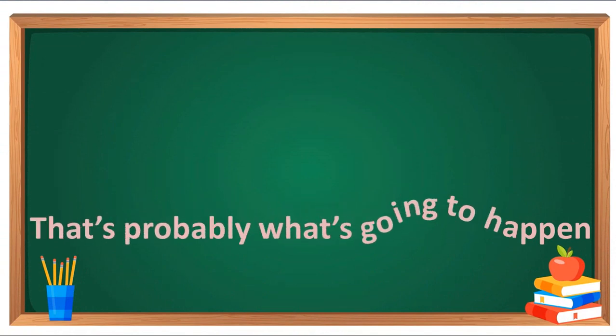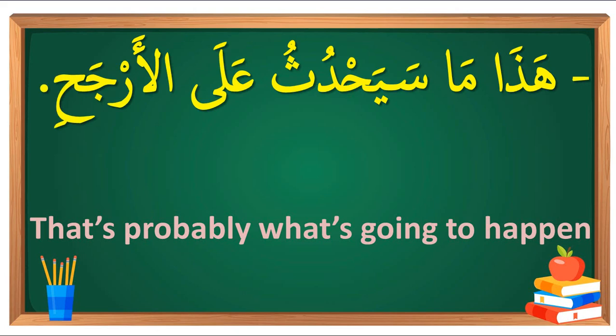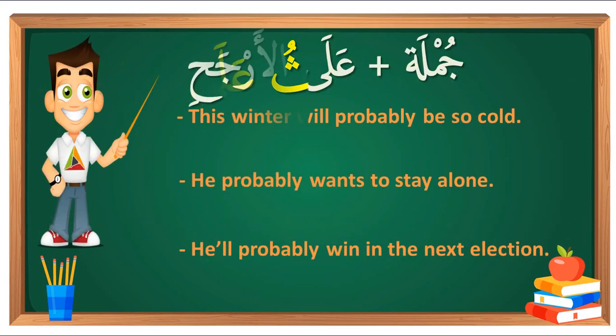That's probably what is going to happen — how to say this sentence in Arabic. We say على الأرجح, which means 'probably.' It is used when you are not certain about something.